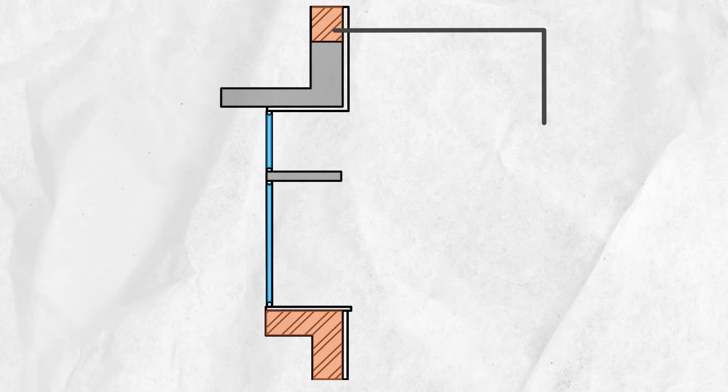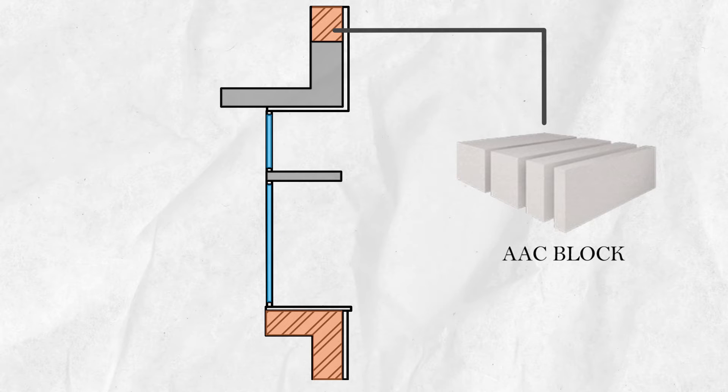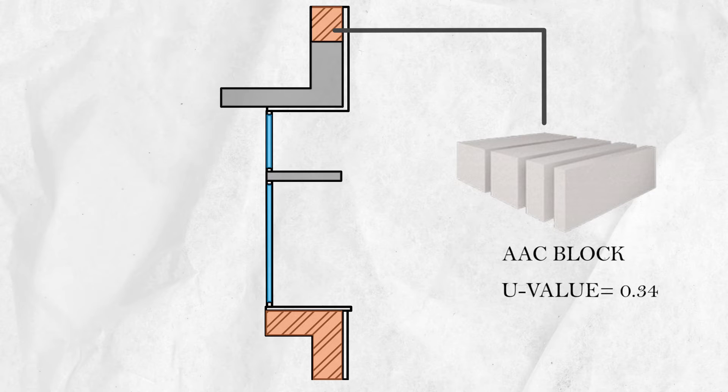The wall is constructed by AAC block masonry wall and fly ash-based plaster with a U-value as low as 0.34.